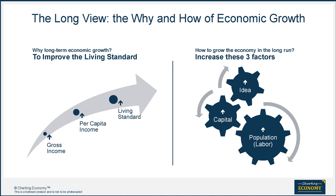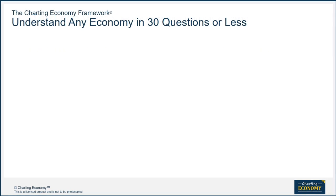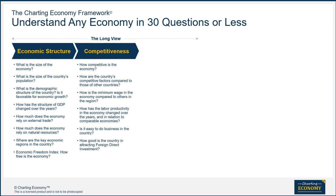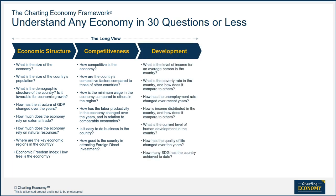What about spectators like us? We can ask questions that give us clues to assess those three factors and the results on people's well-being. In the long view, our framework divides the questions into three groups: economic structure, competitiveness, and development. Development is the eventual result of long-term growth that is in turn driven by economic structure and competitiveness.